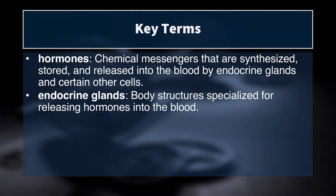Now a few key terms to go over first. Hormones are the chemical messengers of the body. They are synthesized, stored, and released into the blood by endocrine glands and other cells in our various organs. Endocrine glands are body structures specialized for releasing hormones into the blood. Essentially, hormones tell our body's tissues what to do, and most of them have a long half-life.